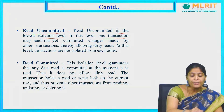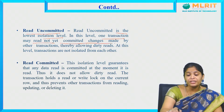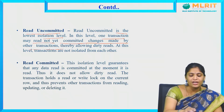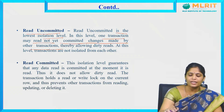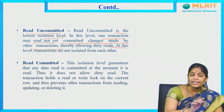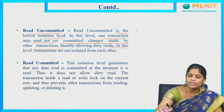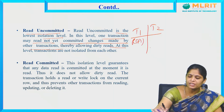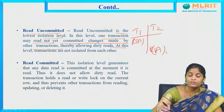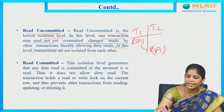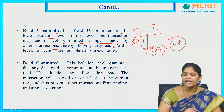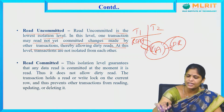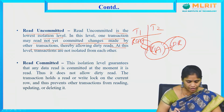Read Uncommitted is the lowest isolation level. In this level, one transaction may read not-yet-committed changes made by another transaction, thereby allowing dirty reads. For example, T1 performs R of A, and before committing, T2 is trying to read the data item. This is what we call dirty read — reading this uncommitted data.